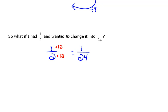We have to do the exact same thing to the top to keep everything balanced. So 1 times 12 would be 12. Now, would 12 pieces out of 24 represent half of that pizza? Absolutely, it would.